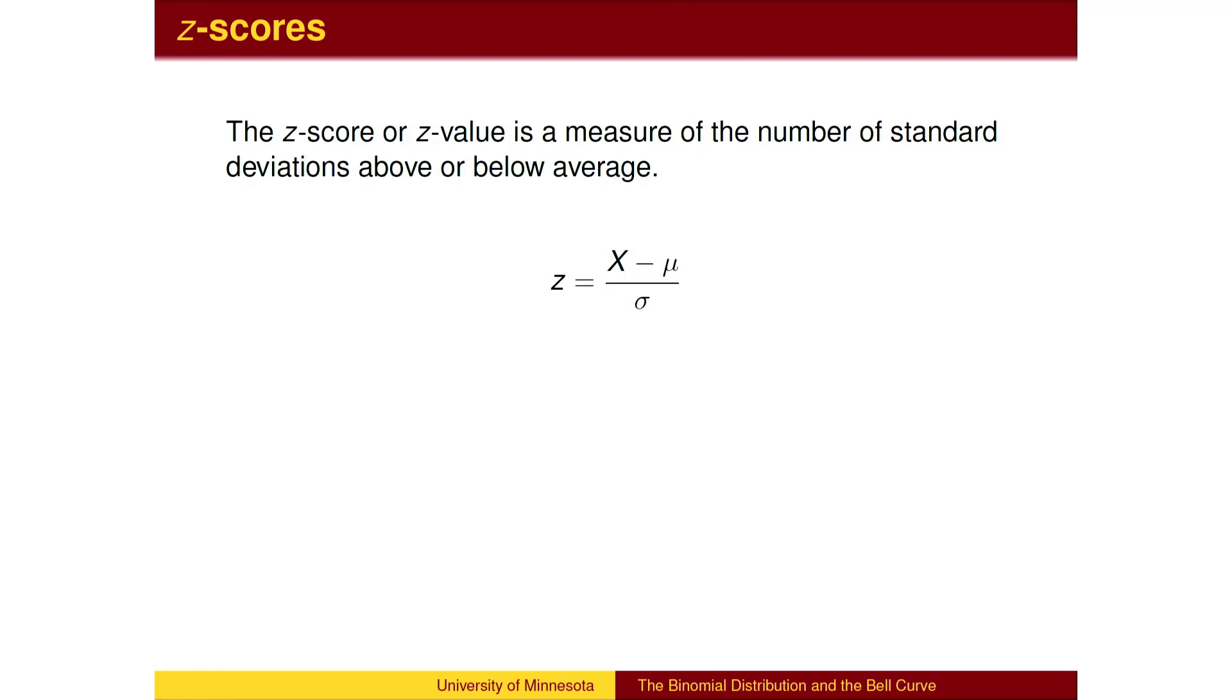For bell curves with other values of mu and sigma, we can convert to the standard normal distribution by computing the z-score. The z-score is the number of standard deviations above the mean.